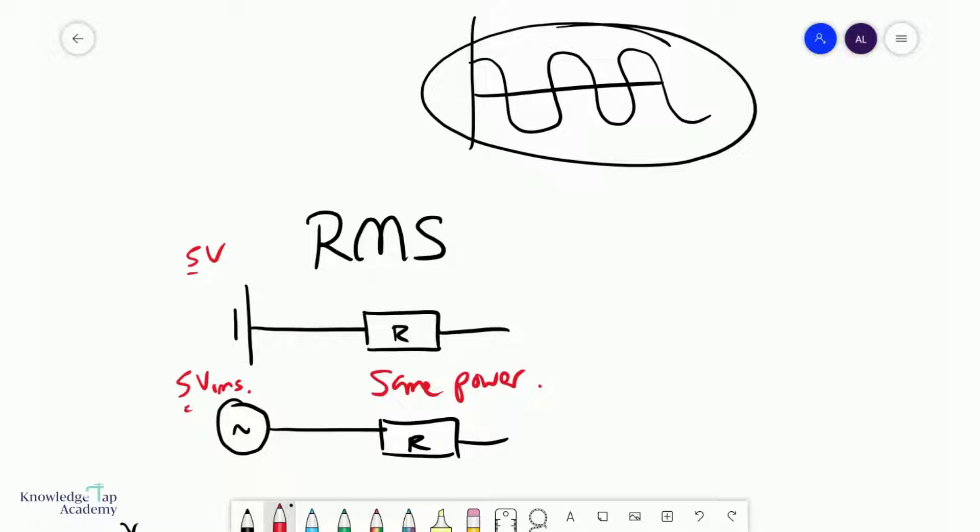And so think of an RMS value of an AC as something to make it equivalent to a DC, so that it makes your life a little bit easier when you try to analyze circuits with an alternating source.